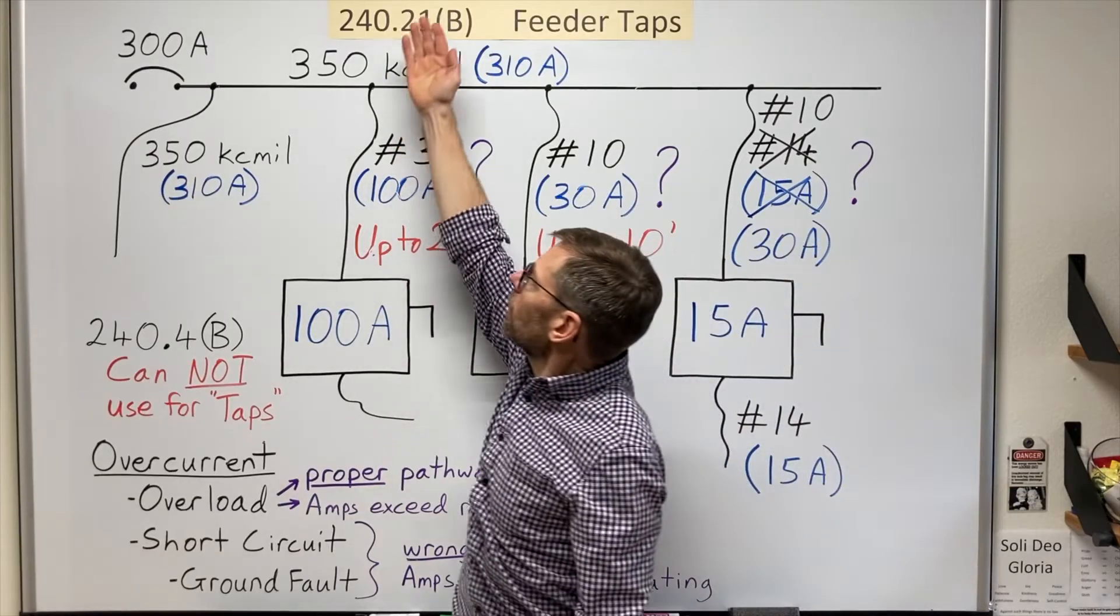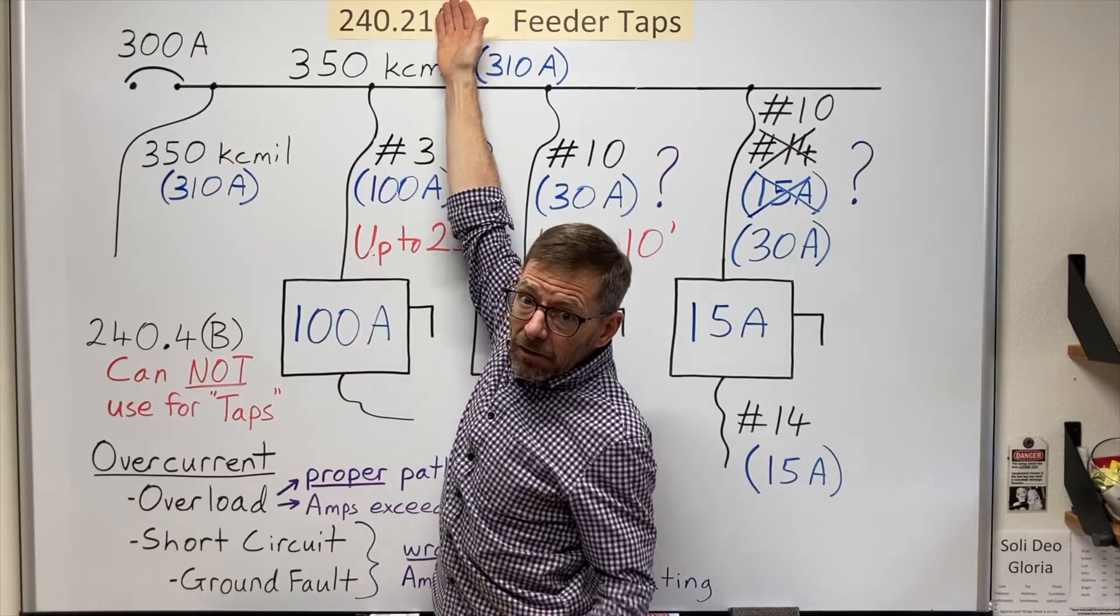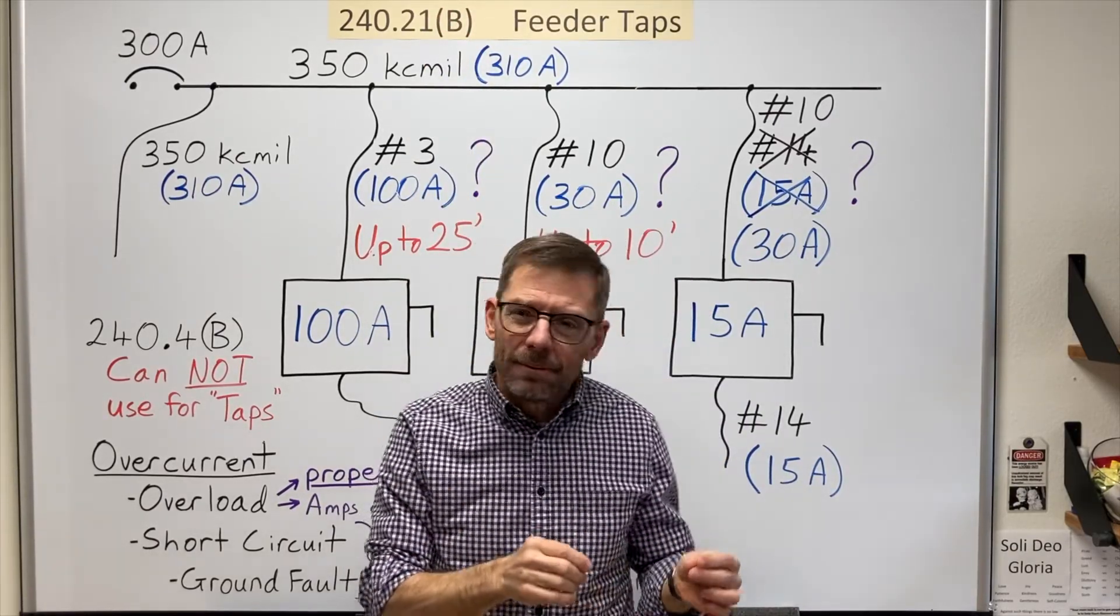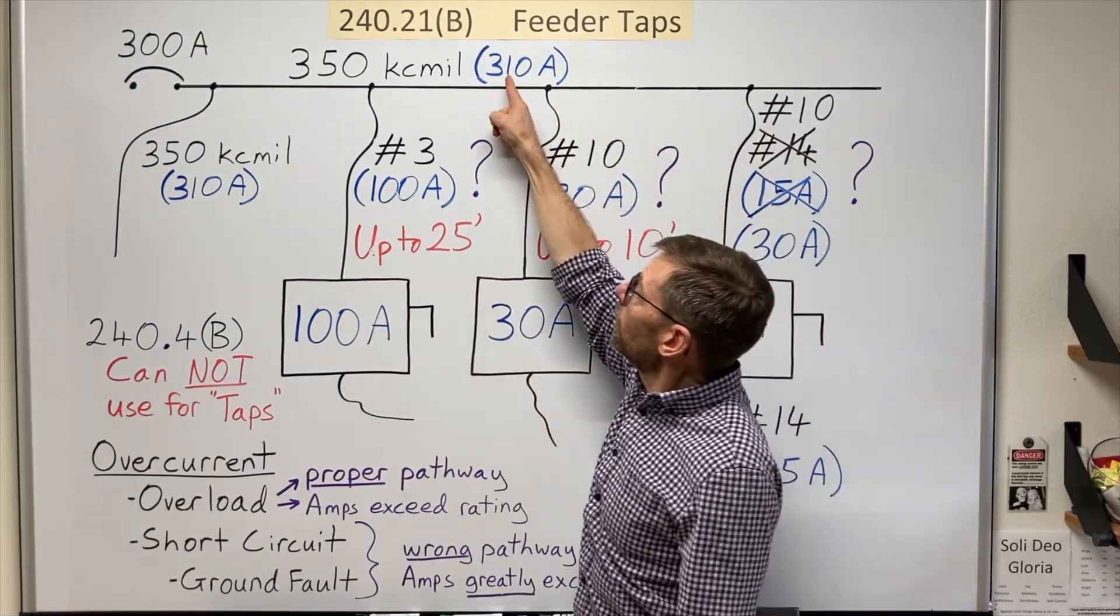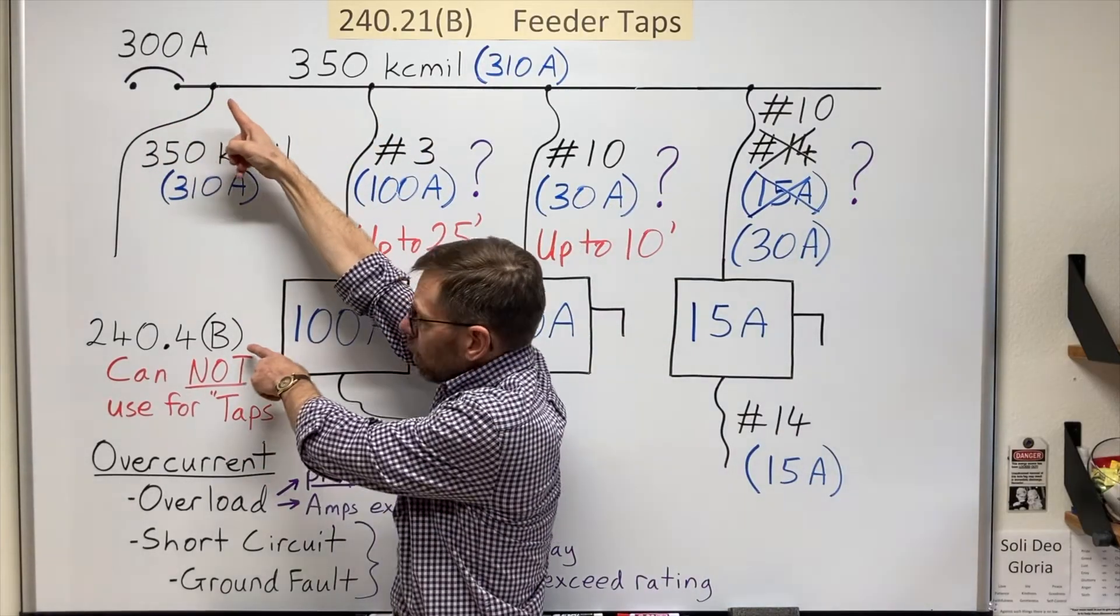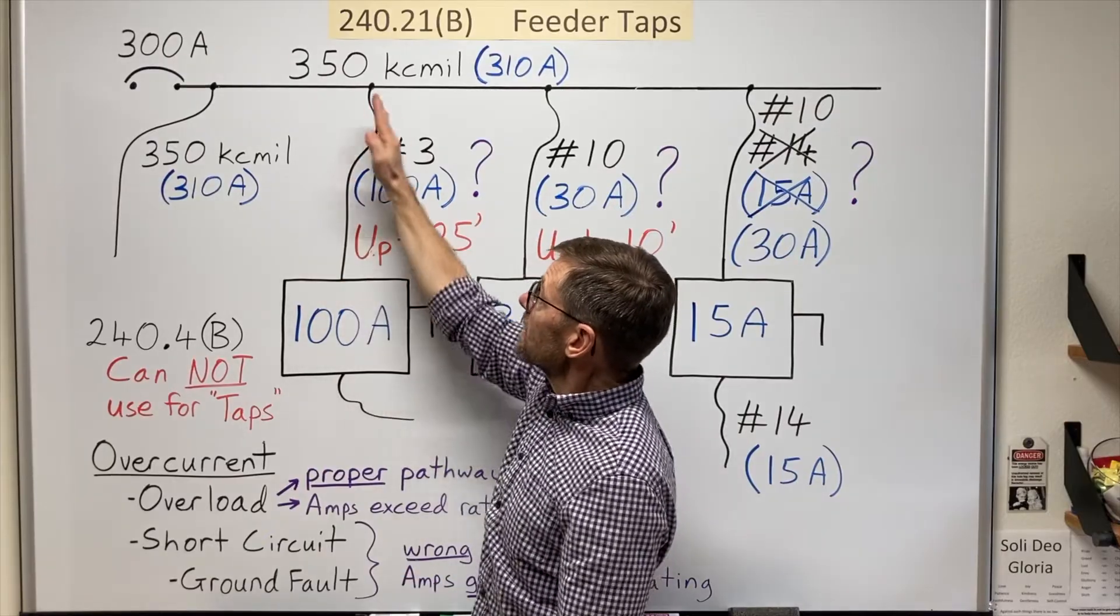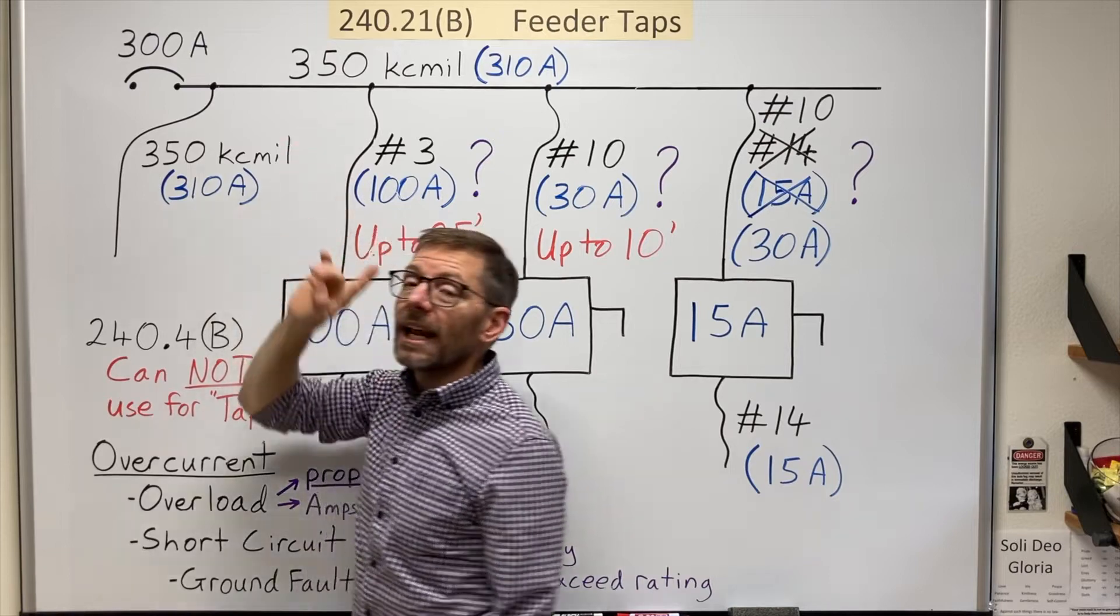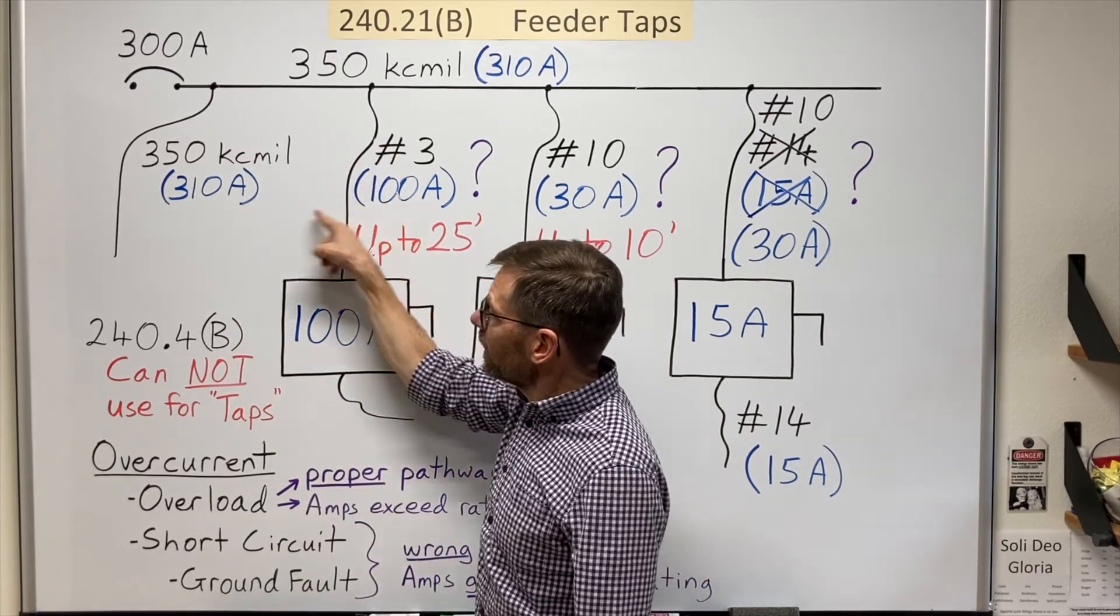Final rule I'm going to look at. 240.21, the very first paragraph, the last sentence of that paragraph, essentially tells me I cannot tap a tap. Do you notice these tap conductors are all spliced into a fully rated conductor for the upstream breaker? I could also employ the roundup rule for this one here. Or I could take these tap conductors and run them directly from the breaker. But I cannot splice into a tap conductor with another tap.